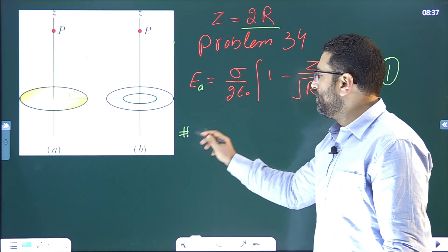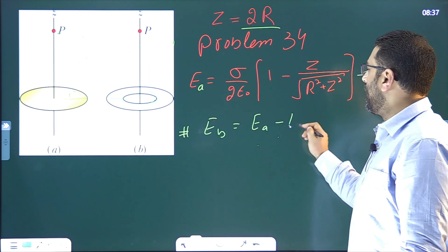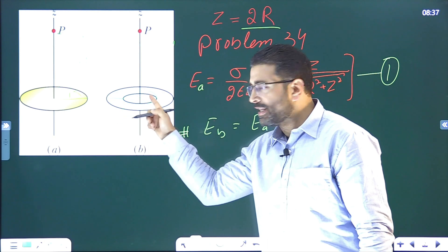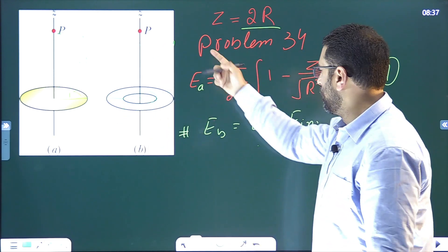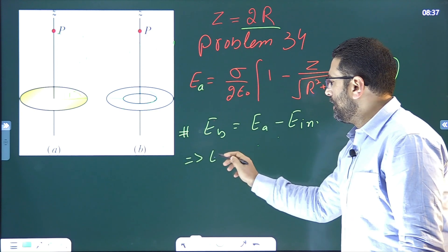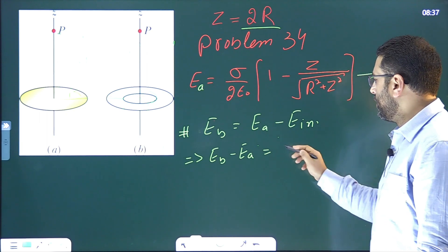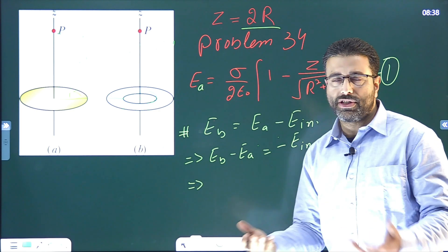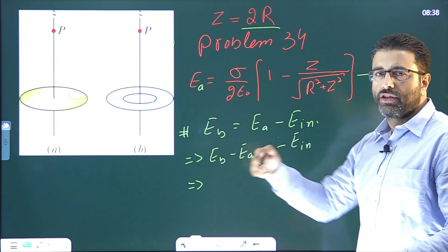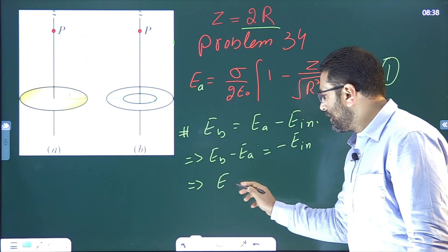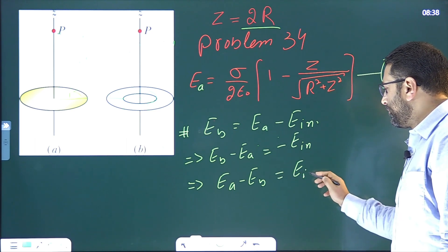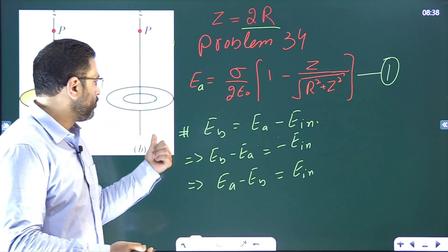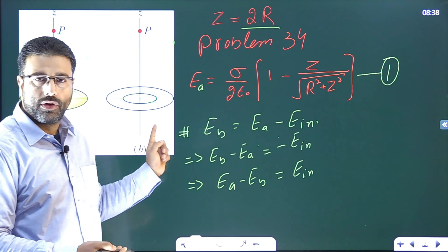Now let's move on. E_b equals E_a minus E_inner. E_inner is the field due to the inner part that was removed. This implies E_a minus E_b equals E_inner. We are only interested in the magnitude of the percentage decrease. The formula is the same for E_inner, but we substitute r/2 in place of r, because the inner part has radius r/2.